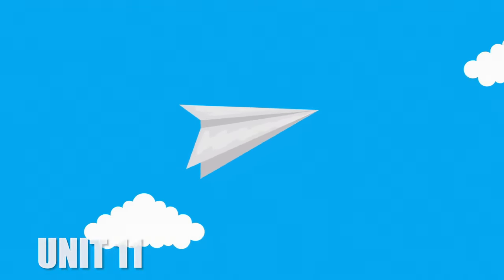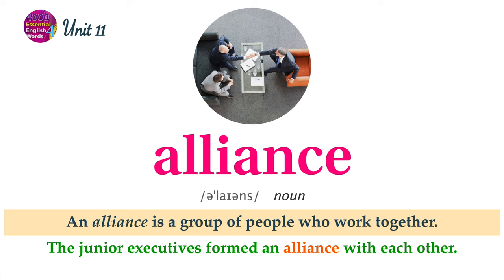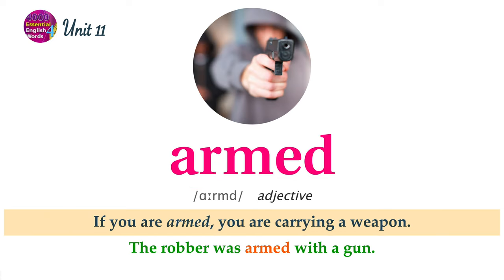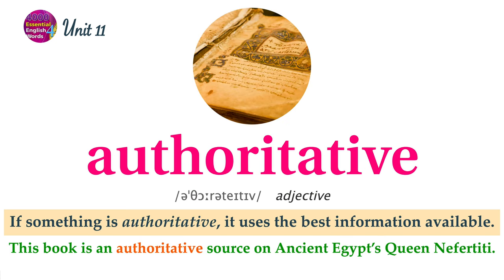Unit 11 Word List. An alliance is a group of people who work together. The junior executives formed an alliance with each other. Applause is the noise made when people clap hands to show approval. At the end of his speech, everyone gave applause. If you are armed, you are carrying a weapon. The robber was armed with a gun. If something is authoritative, it uses the best information available. This book is an authoritative source on ancient Egypt's Queen Nefertiti.